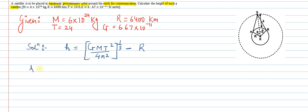So we'll put the values. H is equal to, G value is 6.67 into 10 to the power minus 11, M value is 6 into 10 to the power 24 kg.